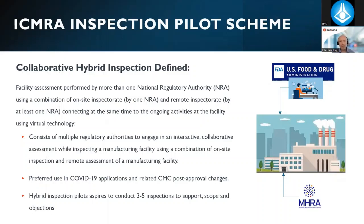In this definition, a hybrid inspection is where joint regulatory agencies team up together to inspect a site. As background, since March 2020 the COVID-19 pandemic forced many regulatory authorities to pause inspections. The remote inspection process was introduced around March 2020 for domestic inspections and from August 2020 for overseas inspections by the TGA.